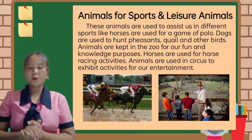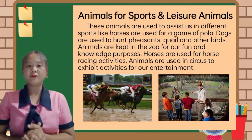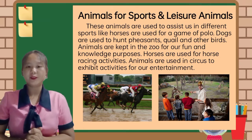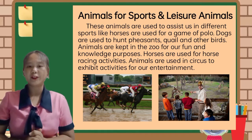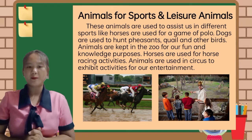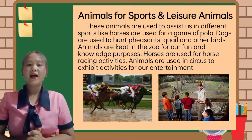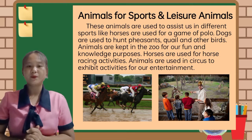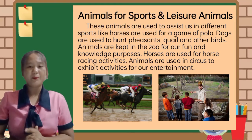Animals are also used for sports and leisure and are a form of entertainment. For example, the animals found in the zoo such as lions, tigers, snakes, elephants, giraffes, and many others serve as entertainment for people, especially children. Animals are also used in sports activities like horse riding, and you can also ride a camel or elephant.